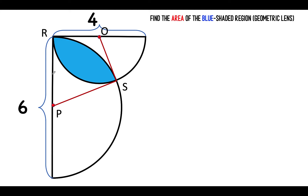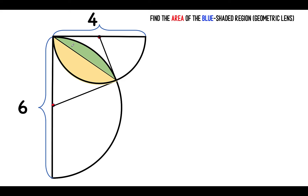Since radii of the same circle are equal, this side here and this side are equal, and this side here and this other side are also equal. Then let's connect point R and S to separate the two segments of our two semicircles, and let's color-code those two segments. In order to find the area of this geometric lens, we need to find the area of this green segment and this yellow segment of the semicircles.